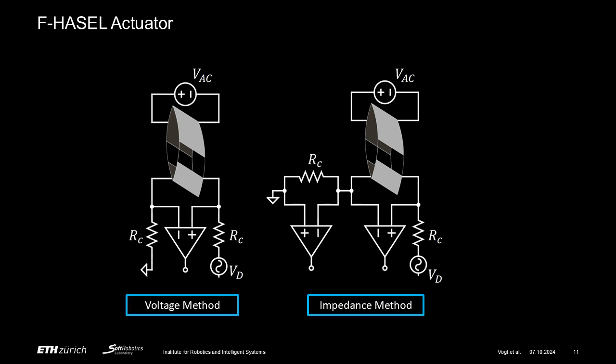We use the acquired measurements for two different methods of estimating the displacement. Firstly, the voltage method, which estimates the displacement by directly mapping it to a change in the voltage measurement caused by a filter response without any additional calculations. Secondly, the impedance method, which uses both voltage and current information to calculate changes in the complex impedance of the low-voltage sensing electrodes.